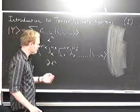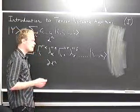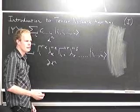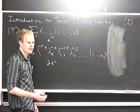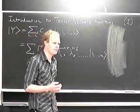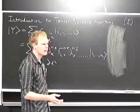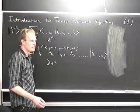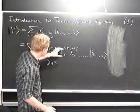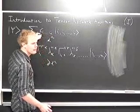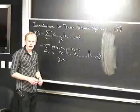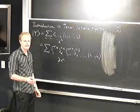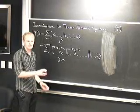Ultimately, in any tensor network algorithm, what you're after is a way to efficiently represent just part of the Hilbert space — the part you're interested in studying. For example, the low-energy regime of a particular Hamiltonian is the most common example. You choose your tensor network ansatz — some decomposition of the original tensor which suits the low-energy regime of the Hamiltonian you're studying. Some decompositions are better suited to particular Hamiltonians than others.